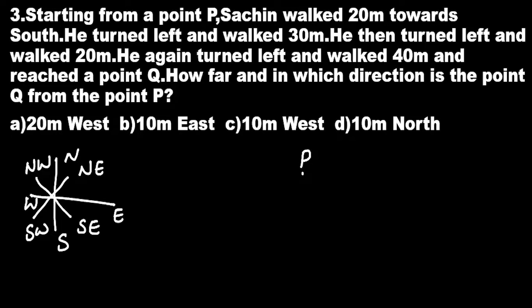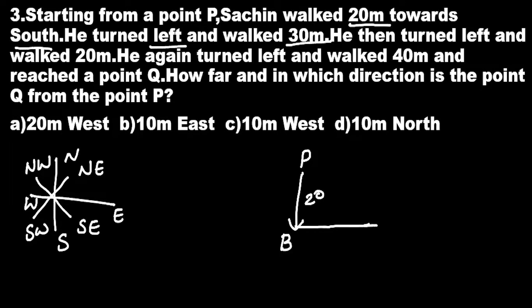Starting from point P, Sachin walked 20 meters towards south up to B. He turned left and walked 30 meters. From B, he turns left — left of B is this side — and he walked 30 meters. This point is C.